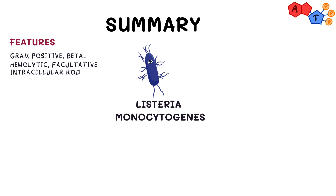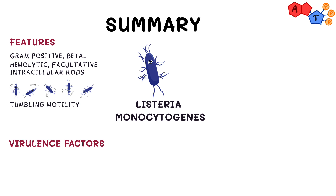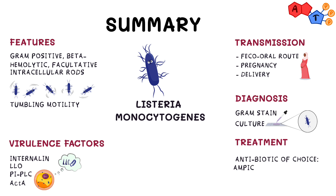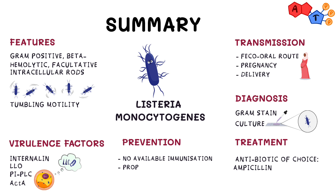We've reached the end of our video. To summarize: Listeria monocytogenes are gram-positive, beta-hemolytic, facultative intracellular rods that exhibit a characteristic tumbling motility. They possess virulence factors including internalins, Listeriolysin O, Phosphatidylinositol-specific Phospholipase C, and actin polymerization. They are transmitted either via the fecal-oral route or during pregnancy and delivery. Diagnosis is mainly via gram-staining and culturing, and ampicillin is usually the antibiotic of choice. However, treatment is tailored according to each case. There isn't available immunization, but proper hand washing and avoidance of risky food sources can significantly prevent the disease.